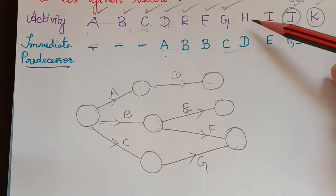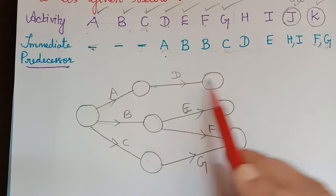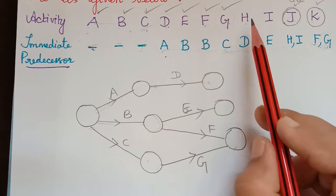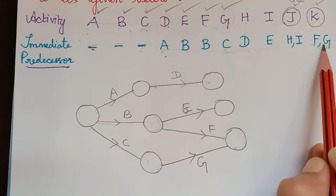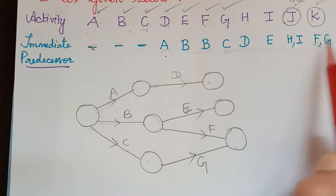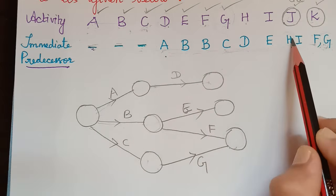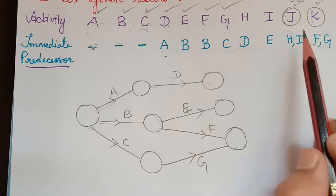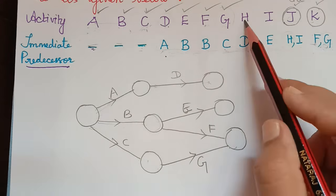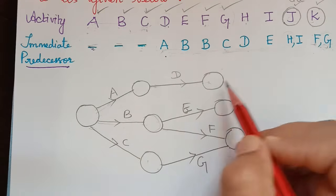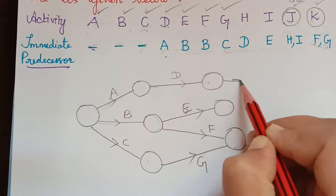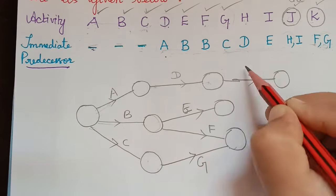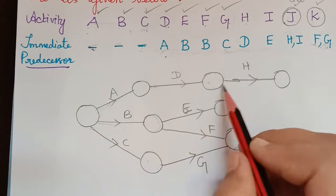Next is activity H. The preceding activity for H is D, so H starts from D's end node. We check whether H has appeared in the predecessor list with any completed activity. H appears alongside I, but I is not yet completed, so we need not worry. We draw H directly after D.